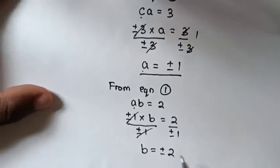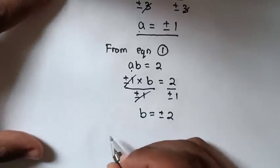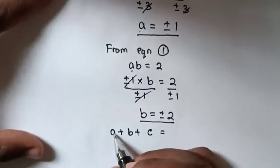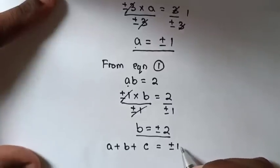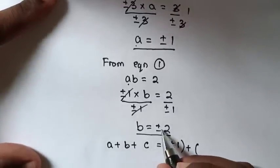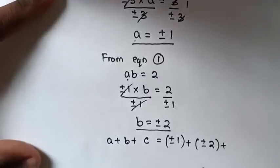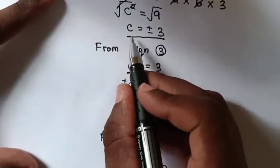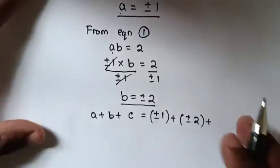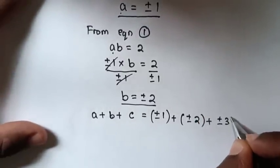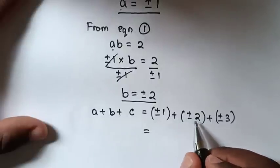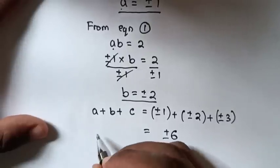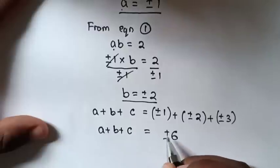Now that we have all values, A plus B plus C equals plus or minus 1 plus plus or minus 2 plus plus or minus 3. The sum is 1 plus 2 plus 3 equals 6, so A plus B plus C equals plus or minus 6.